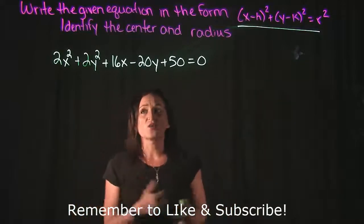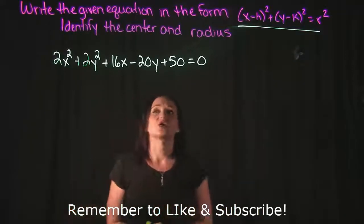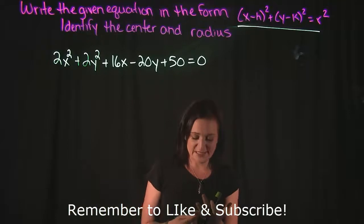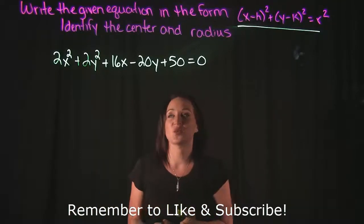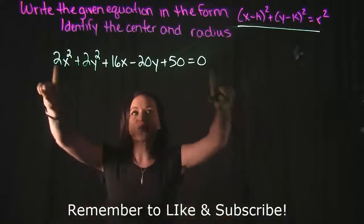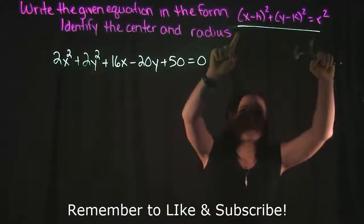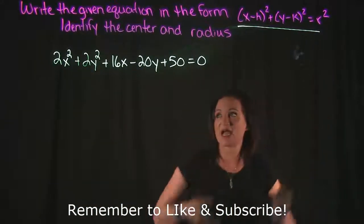But over here, we're given the equation 2x² + 2y² + 16x - 20y + 50 = 0. And we need to figure out how do we take this and convert it to something that looks more in this style over here.